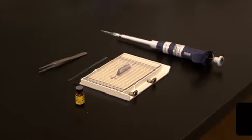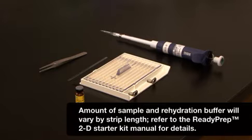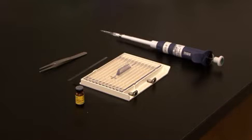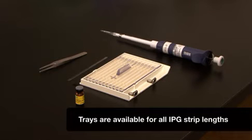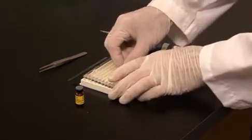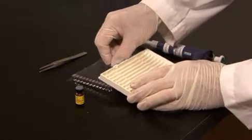To rehydrate the strip, I will load 200 microliters of sample into the focusing tray in each lane that I'll be running a strip. I am using a focusing tray that is specific for 11 cm strips. Trays are available for all IPG strip lengths.